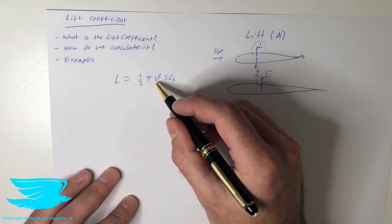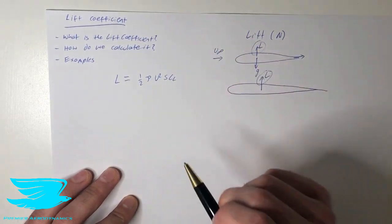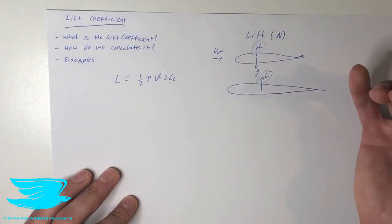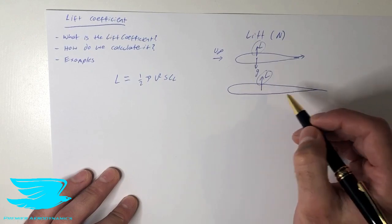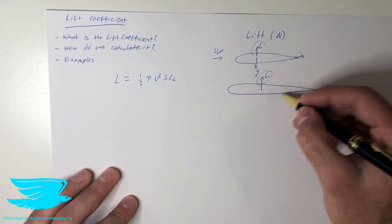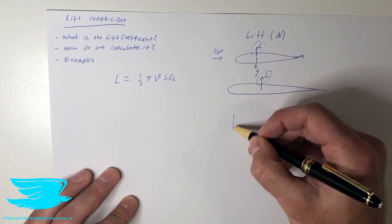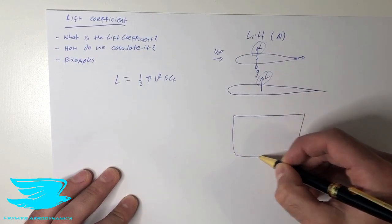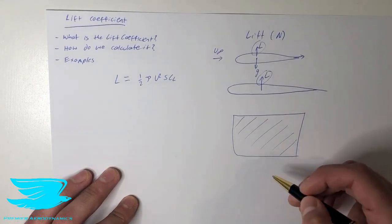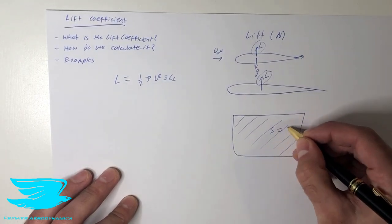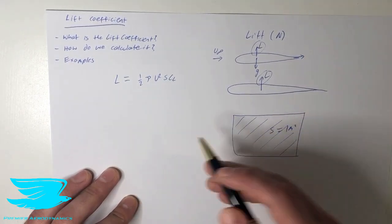We have v or u, that's the free stream velocity. We have s, which is the reference area. So in tip, and usually it is the plane area. So if we look at this from the top, any of these objects, we might have it looking like this. So the reference area, s, is now this area here, whatever that is. It could be, let's say, one meter squared.